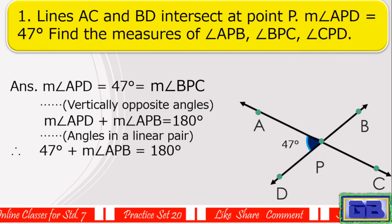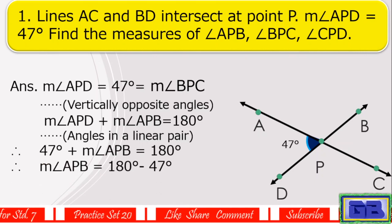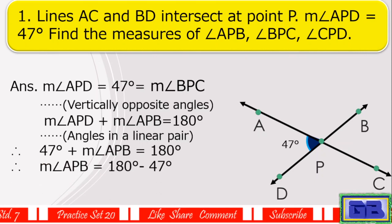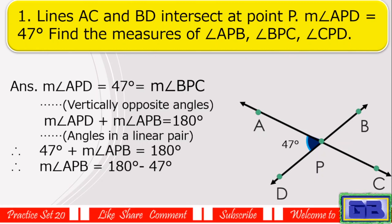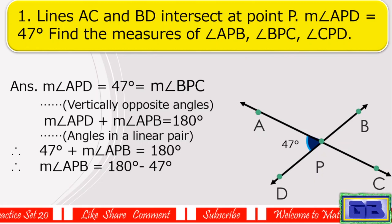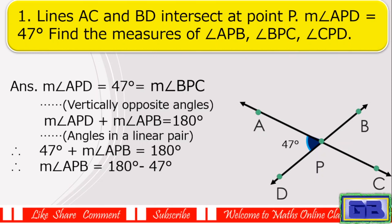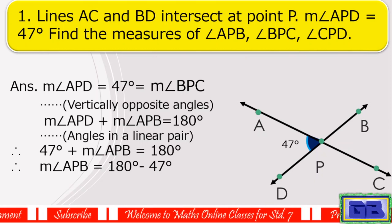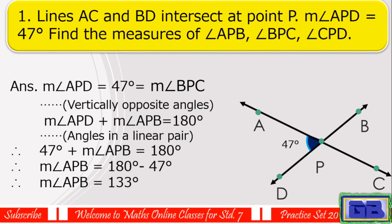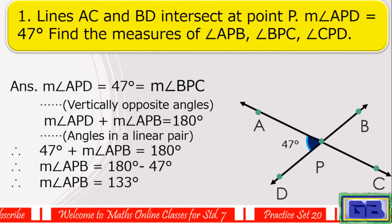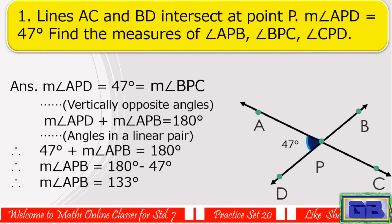Shifting 47 degrees to the right side: measure of angle APB equals 180 degrees minus 47 degrees. After subtraction, we get measure of angle APB equals 133 degrees.